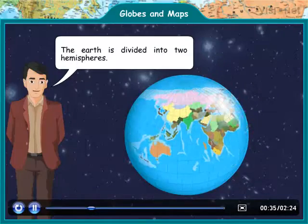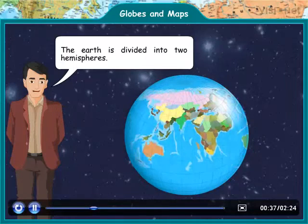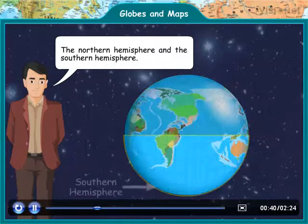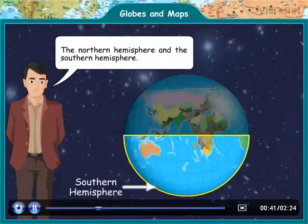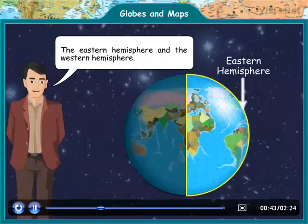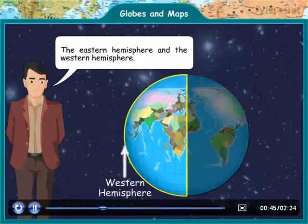The Earth is divided into two hemispheres: the Northern Hemisphere and the Southern Hemisphere, or the Eastern Hemisphere and the Western Hemisphere.